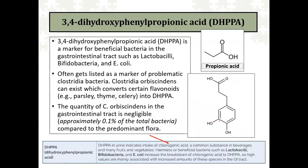DHPPA stands for 3,4-dihydroxyphenylpropionic acid. We have a propionic acid side group coming off here, and then a hydroxyl group coming off the benzene ring at positions three and four — that's our 3,4-di. There are two hydroxy groups. Anytime we attach a hydroxy group to a benzene ring, it's a phenol. So 3,4-dihydroxyphenyl, or phenylpropionic acid — that's how the name is established.